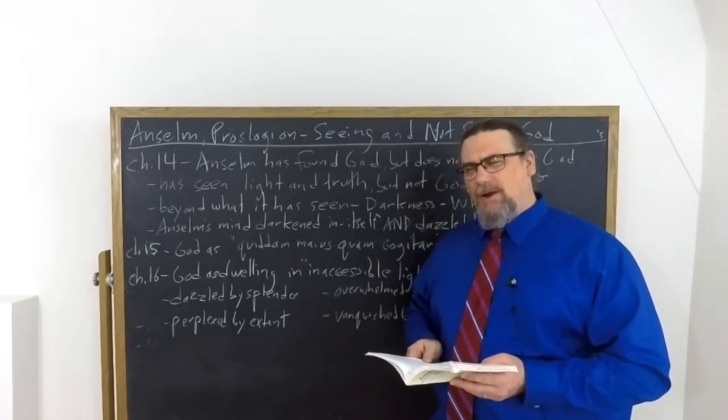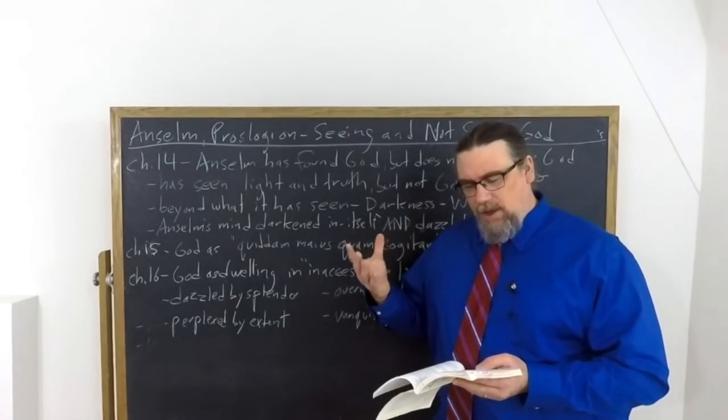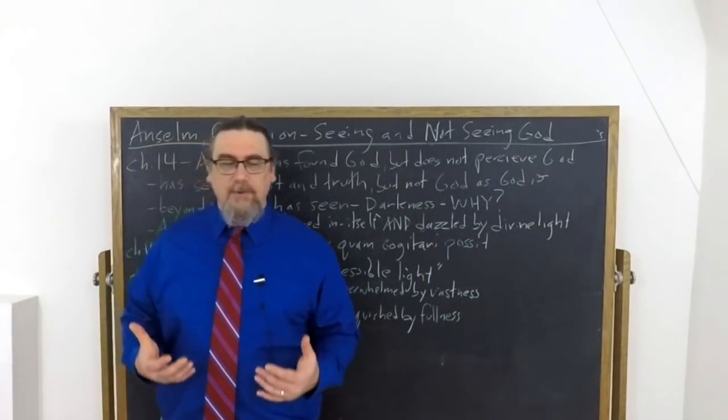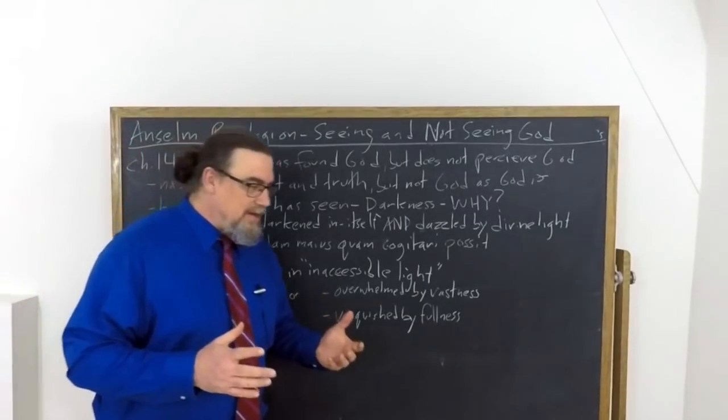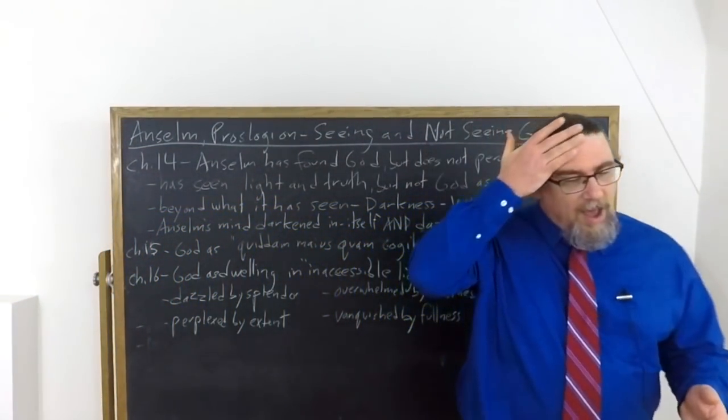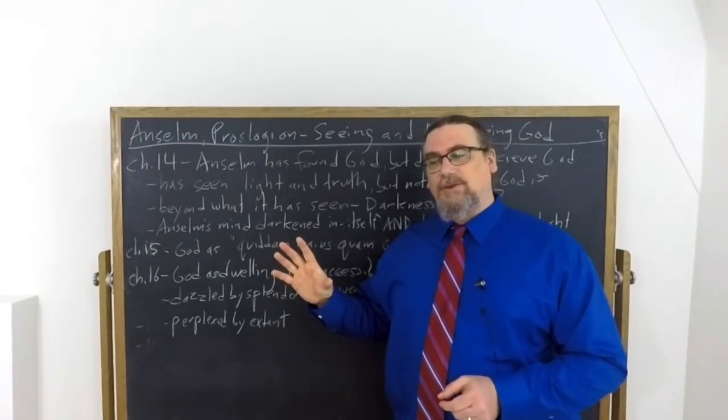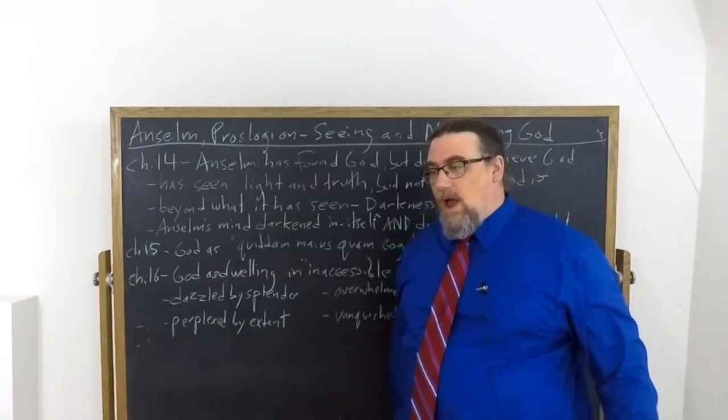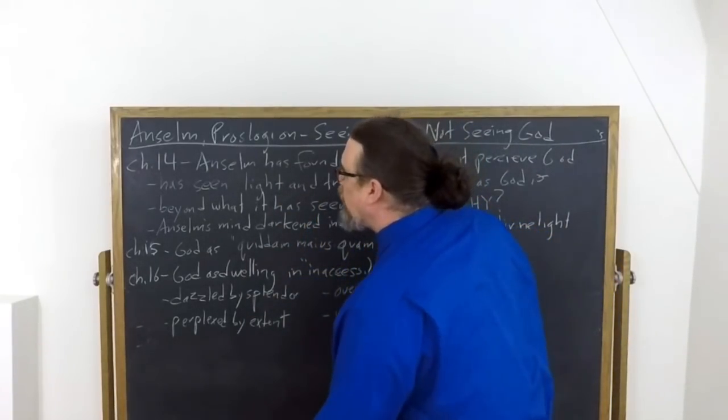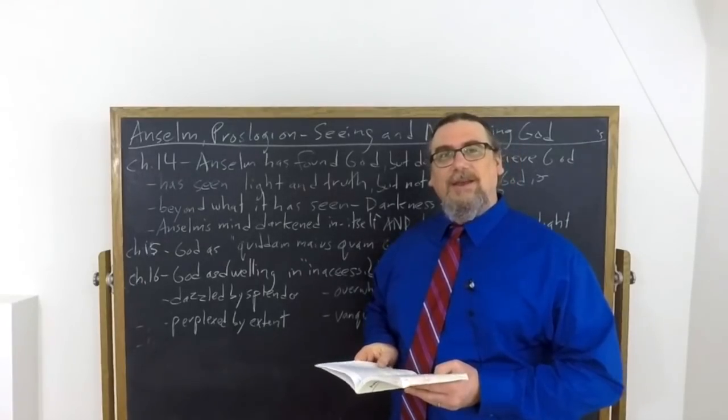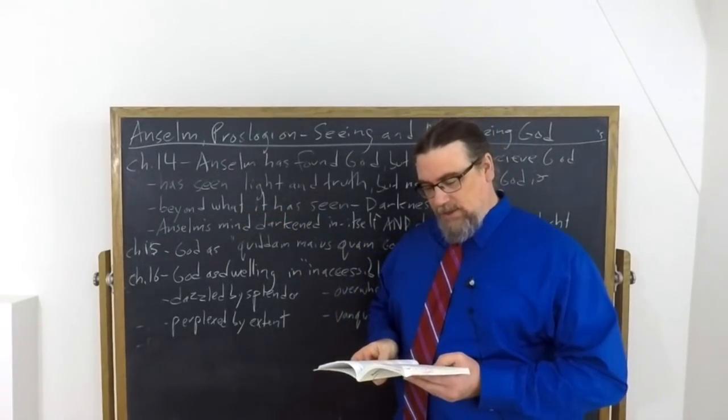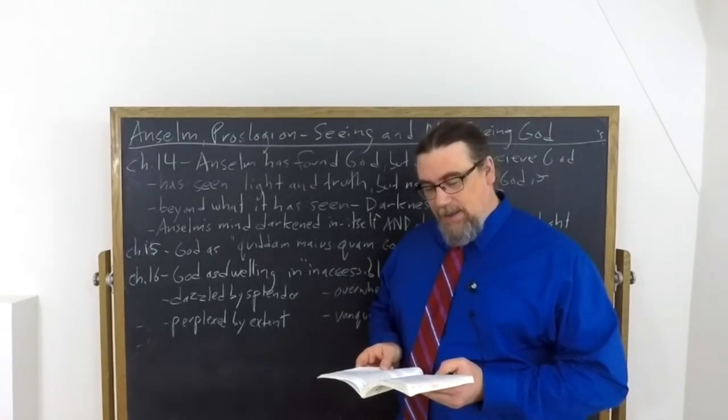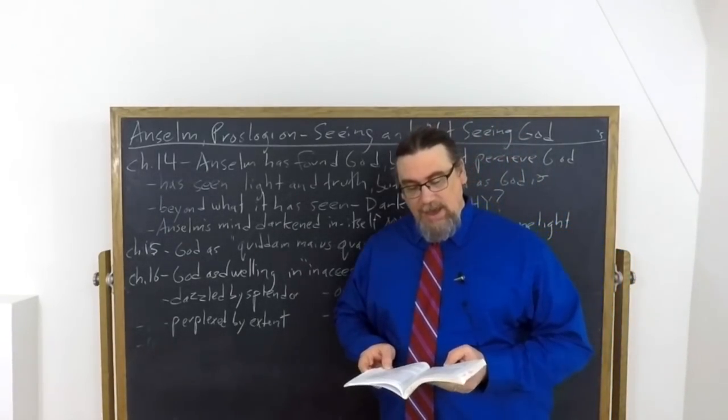So he puzzles here and he says, has it not found him whom it found to be light and truth? And these are two ways of naming or conceptualizing God: light, which Anselm was already using for God in the Monologion, and truth, veritas, which is going to show up in a later dialogue specifically on truth, where God is the sort of capital T truth from which all other truths depend and in which all other truths are. So he says, how could you have understood anything at all about you, that is God, except by your light and truth? Therefore, if it has seen the light and the truth, it has seen you.